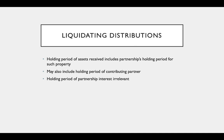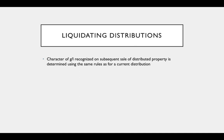The character of the gain or loss recognized on the subsequent sale of distributed property is determined using the same rules as for a current distribution. So remember from our current distribution discussion: if we were distributed assets like inventory or unrealized receivables and we later sold those, there are rules that make that income ordinary. Inventory sold within five years and unrealized receivables produce ordinary income to the partner that received the distribution; otherwise it's generally a capital gain or loss.